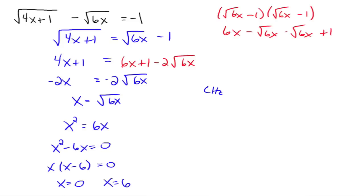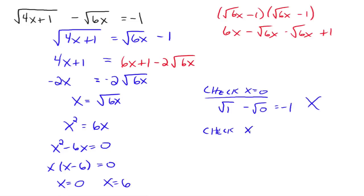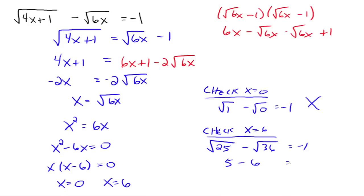Do the check. Check x equals 0: plugging 0 in, you'd have the square root of 1 minus the square root of 0 equals negative 1. Is that true? It doesn't check. What about x equals 6? Plug 6 in: 4 times 6 is 24, plus 1 gives the square root of 25, minus the square root of 36, equals negative 1. That's 5 minus 6 equals negative 1, and that does work. So x equals 6 is the only solution.